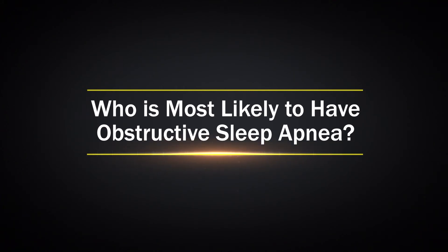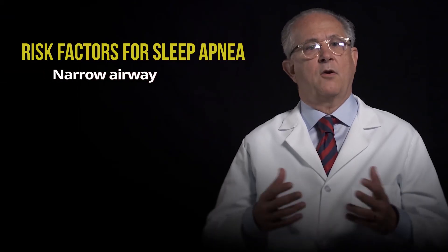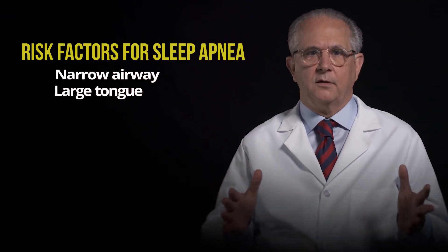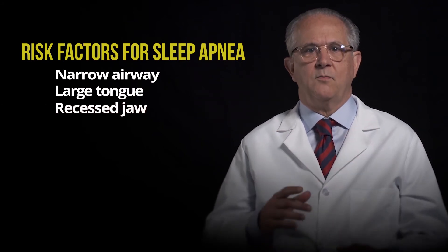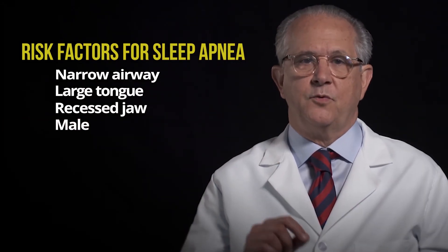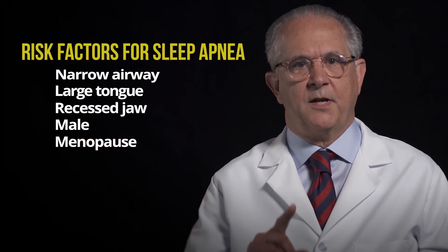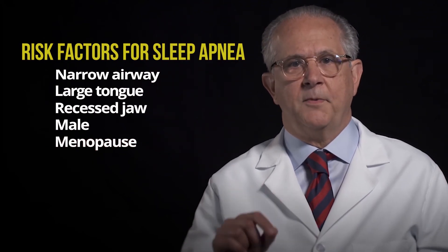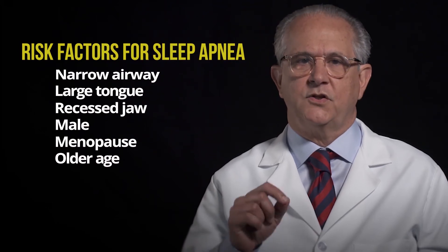Who is most likely to have Obstructive Sleep Apnea? The people who are most likely to develop it are those who have excess body weight, especially those who are obese. However, even people with a normal body weight can develop Obstructive Sleep Apnea. You may have a narrow airway, a large tongue, or a recessed jaw, all of which make it more likely. Men have a higher risk than women, but the risk for women increases after menopause. In both men and women, the risk of Obstructive Sleep Apnea increases with age.